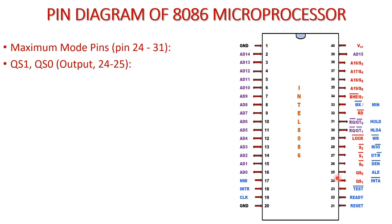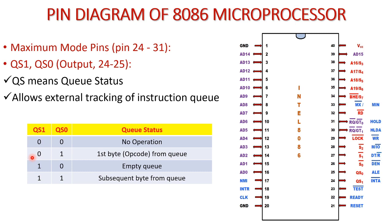Next are the maximum mode pins, available from pin number 24 to 31. The first signals are QS1 and QS0, available at pin numbers 24 and 25. These are output signals that indicate the queue status, allowing external tracking of the instruction queue. If QS1 and QS0 are 00, no operation takes place. If 01, the first byte (opcode) from the queue is transferred. If 10, the queue is emptied. If 11, the subsequent byte of the opcode is taken from the queue for execution.